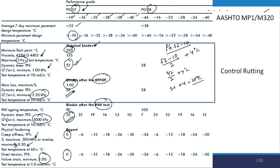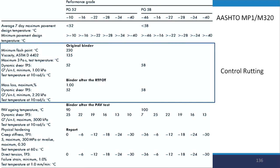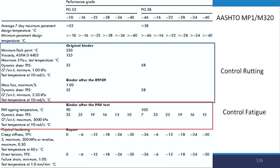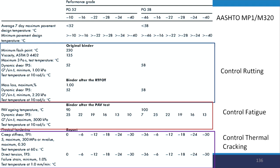I have marked which rows correspond to different performance criteria. The row marked in blue controls rutting, that is G* by sine delta. Another row is for fatigue — G* dot sine delta — and finally there is a row to control thermal or low temperature cracking, based on the BBR and DTT test parameters.